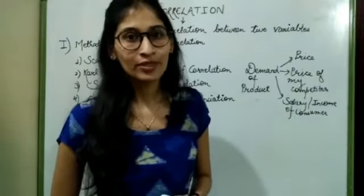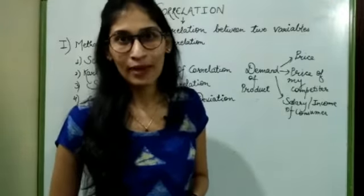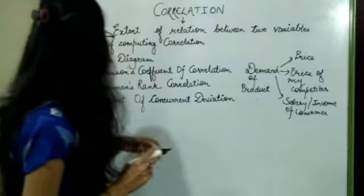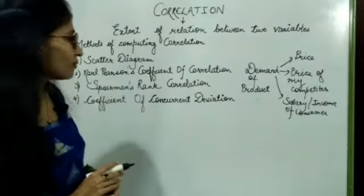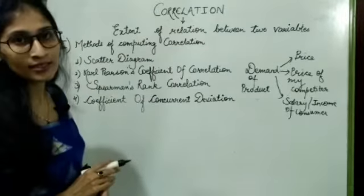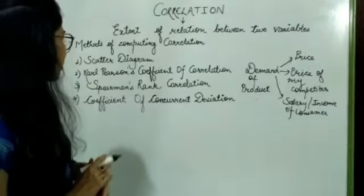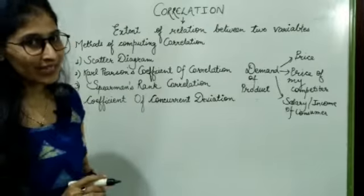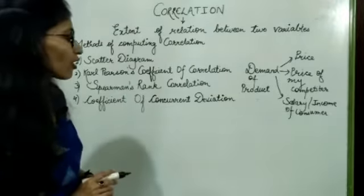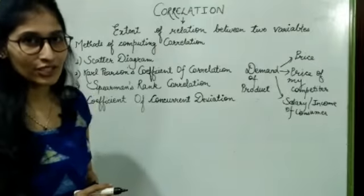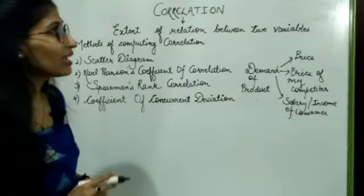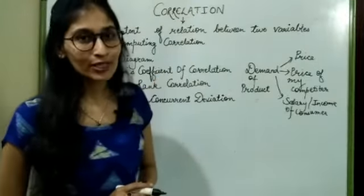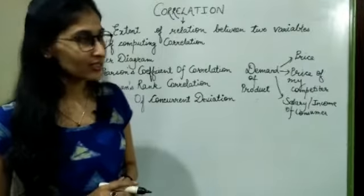In this chapter, we are going to discuss four methods of correlation. The first method is scatter diagram. Second is Carl Pearson's coefficient of correlation. Third is Spearman's rank correlation, and fourth is the coefficient of concurrent deviation. Before that, let's discuss how we are going to express correlation.